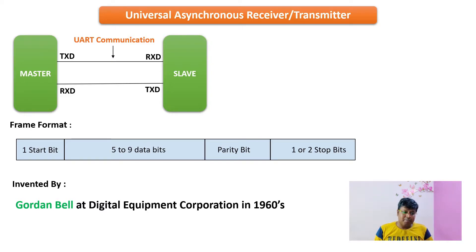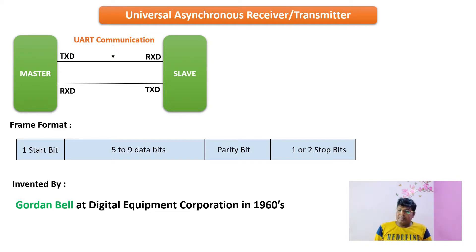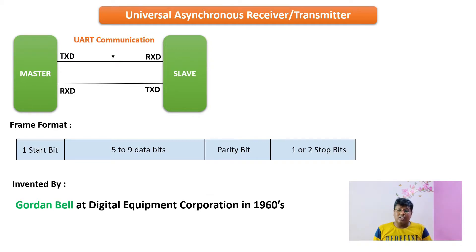The UART frame format consists of one start bit, which initiates the start of communication to the slave, followed by five to nine data bits. Along with this, we have one parity bit that can be either even parity or odd parity, configured via a register. Finally, there are one or two stop bits, which signal the stop of communication to the slave.